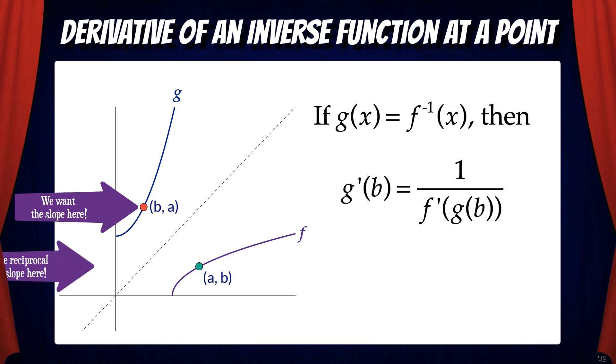But we do know that it's the reciprocal of the slope at a on the f graph. So we're going to use that fact to help us find g prime of b.